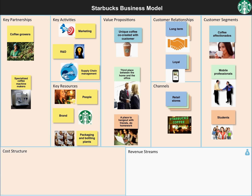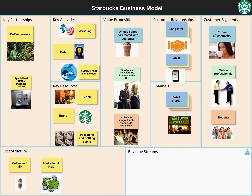Its cost structure involves costs associated with delivering not just coffee, but a unique coffee experience. In addition to raw material costs such as milk and coffee, it spends heavily on marketing and research and development, rents in prime locations, as well as people costs. It is unique in offering health coverage to its part-time workers.